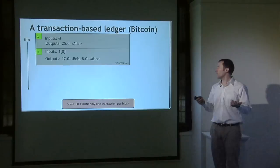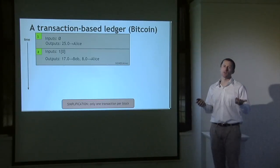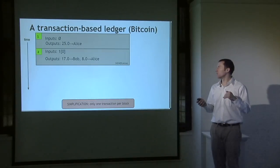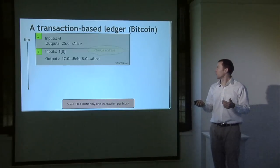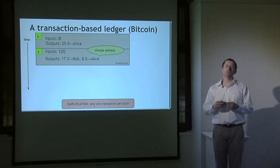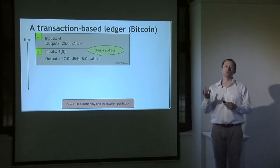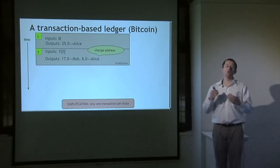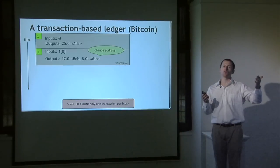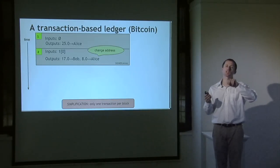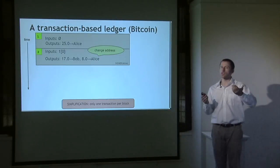You might ask why Alice has to send money back to herself. She took the 25 coins assigned to her in transaction one, only wanted to pay 17 to Bob, and has to have a new output sending 8 coins back to herself — possibly to a different key but to herself. This is called a change address. The design is that you always completely consume the output of a previous transaction. There's no way to say 'I only need 17 coins from that previous output' — you have to use all 25 and create a second output sending change back to yourself.